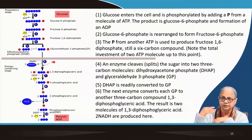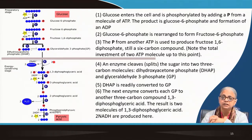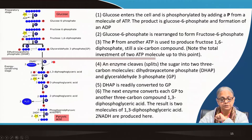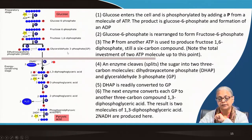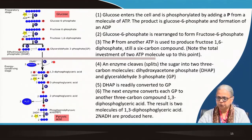Fructose-1,6-diphosphate is then cleaved into two C3 compounds. Each step of these reactions is mediated by a specific enzyme — we are not interested in that level of detail, but you can refer to the textbook. The two C3 compounds are dihydroxyacetone phosphate (DHAP) and glyceraldehyde-3-phosphate (G3P). These two are interchangeable; DHAP is readily converted to G3P.